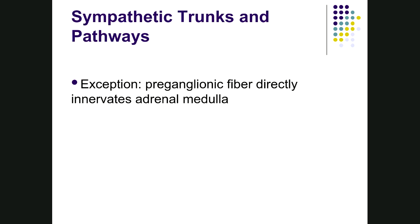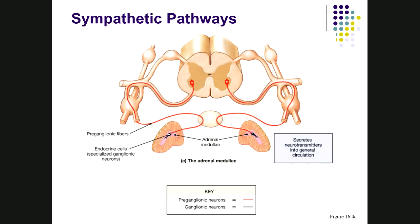There is one exception to the two-neuron rule: the adrenal medulla. A pre-ganglionic fiber goes all the way to the adrenal medulla without synapsing in a ganglion first. The adrenal medulla is a neurogland — it produces neurotransmitters and releases them into the bloodstream as neurohormones (norepinephrine and epinephrine). Since blood goes everywhere, these hormones can affect organs throughout the entire body.